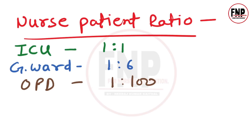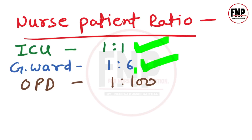For the upcoming NORSET exam, remember important nurse-to-patient ratios: In the ICU, the ratio is 1 nurse to 1 patient. In general wards, 1 nursing staff per 6 patients. In OPD, 1 nurse per 100 patients. These three ratios are frequently asked in nursing exams.